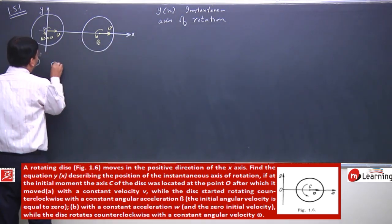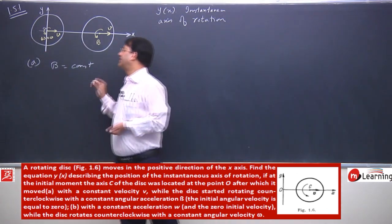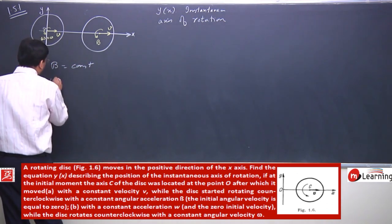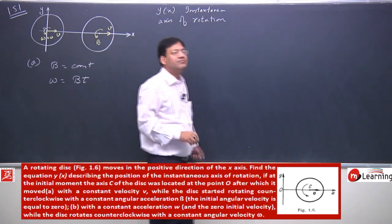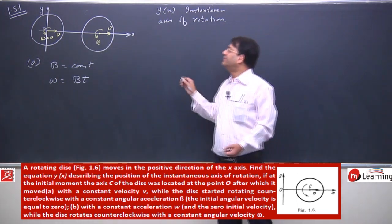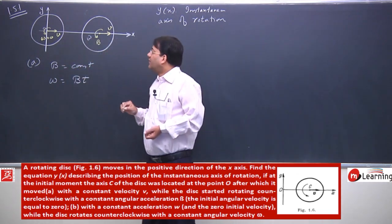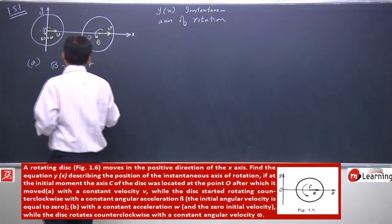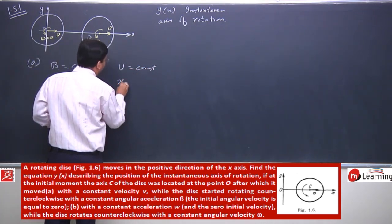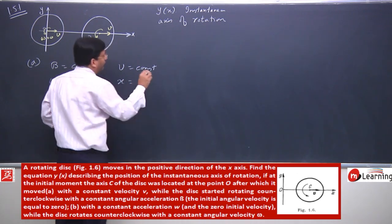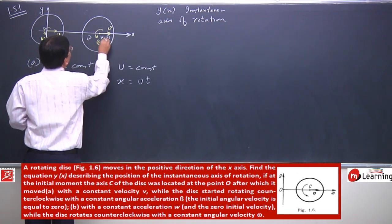Since β is constant, the angular velocity at any time t would be ω = β·t. Since velocity v is constant, x = v·t, so the centre is located at position (x, 0).